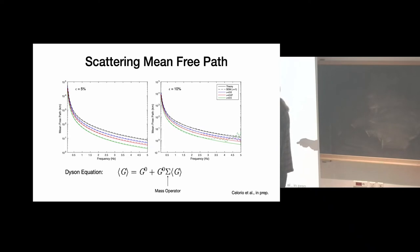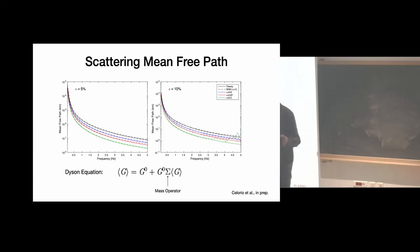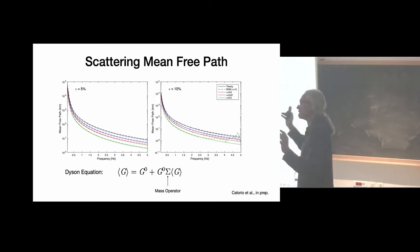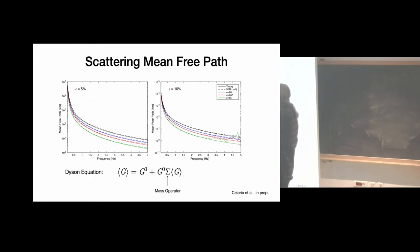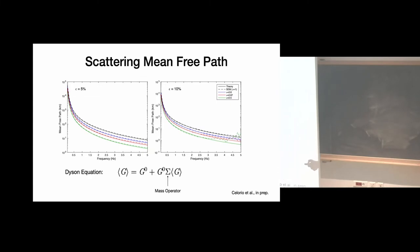With this Dyson equation and the independent scattering approximation we can compute the scattering mean free path theoretically and compare it to numerical experiments. The Dyson equation can be viewed as a wave equation with a complex wave number — equivalent to a Helmholtz equation with a dissipation term, where the 'dissipation' is actually scattering conversion. The theory works extremely well across a wide range of frequencies and random medium types.